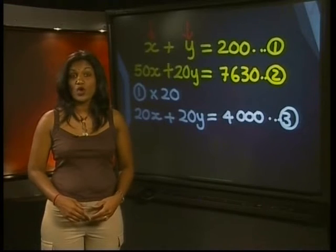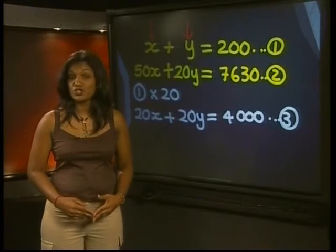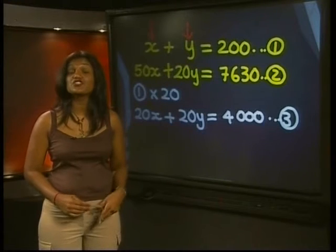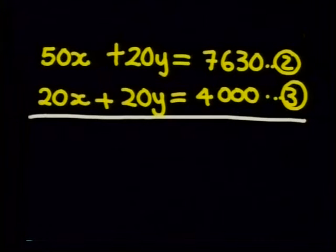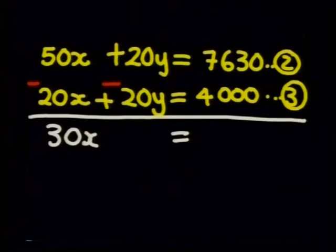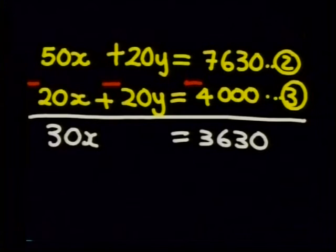That's better now. We have 20 as the coefficient of y in both equations 2 and 3. Now I can subtract this new equation from equation 2. Remember we need to change the signs. So this becomes minus 20x. 50x minus 20x gives me 30x. 20y minus 20y gives me 0 is equal to 7630 minus 4000 which gives me 3630. So to solve for x we need to divide both sides by 30 and I get x is equal to 121.